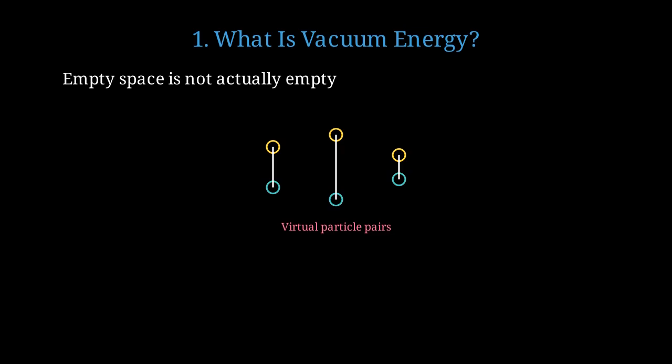Particles and antiparticles appear, exist briefly, then annihilate. This happens everywhere, all the time. The Heisenberg uncertainty principle allows these particles to borrow energy from nothing, as long as they pay it back quickly enough.